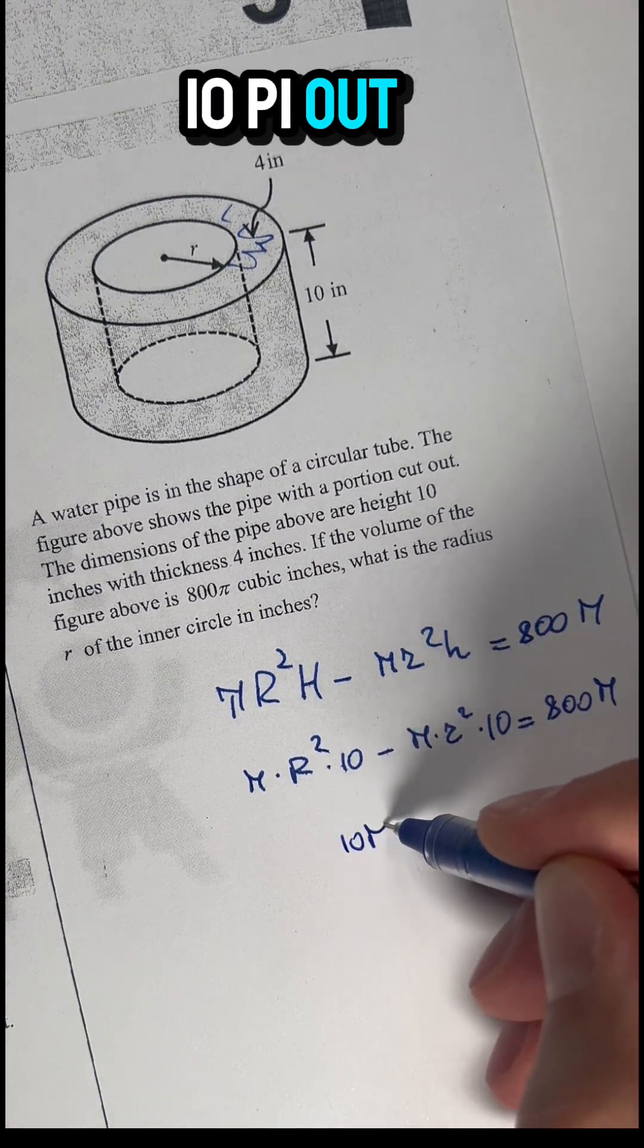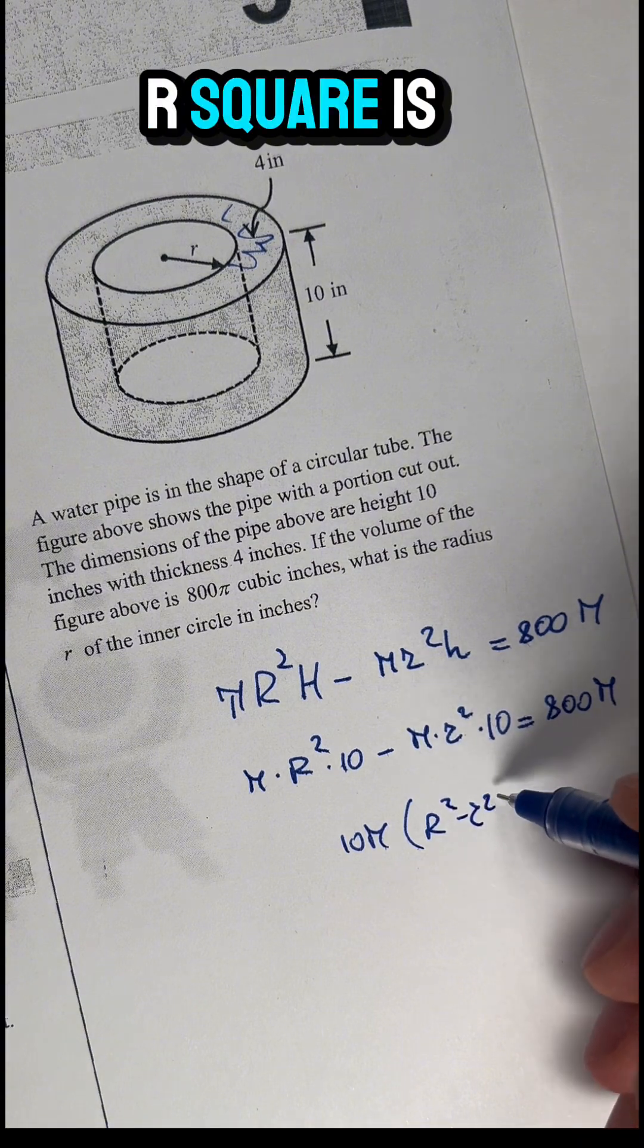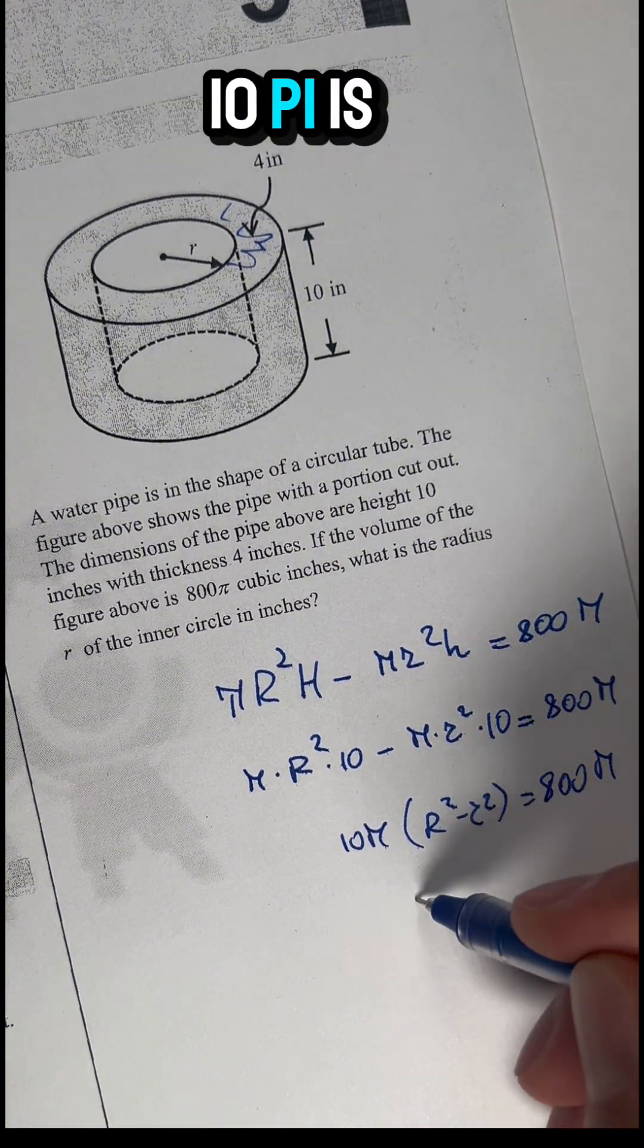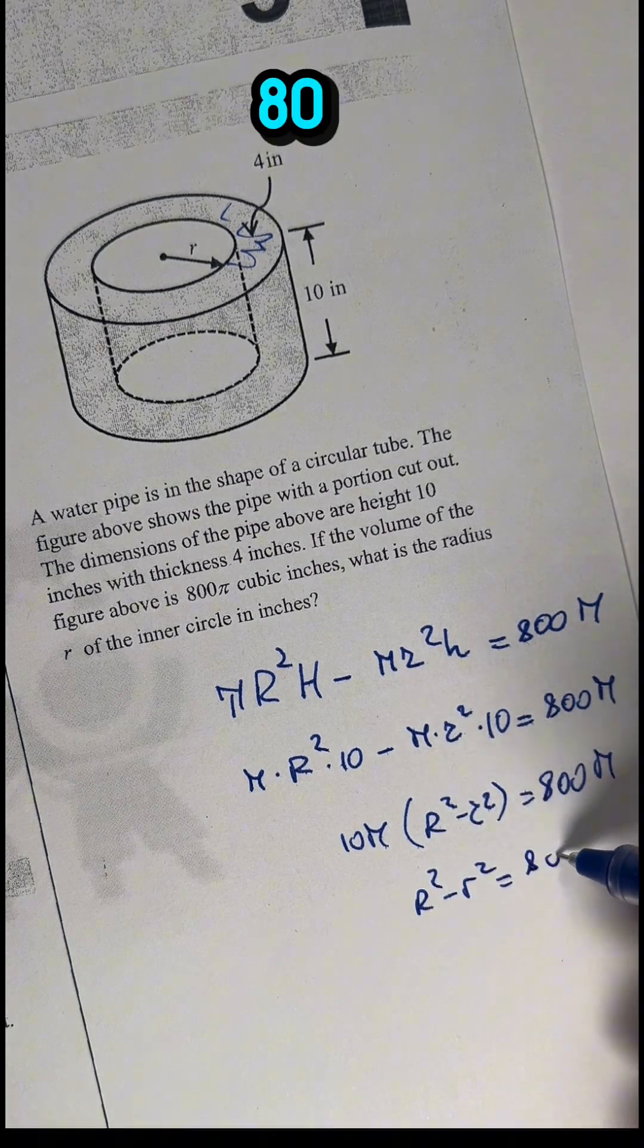If I factor out 10π from the brackets, R² minus r² equals 800π. Dividing both sides by 10π gives R² minus r² equals 80.